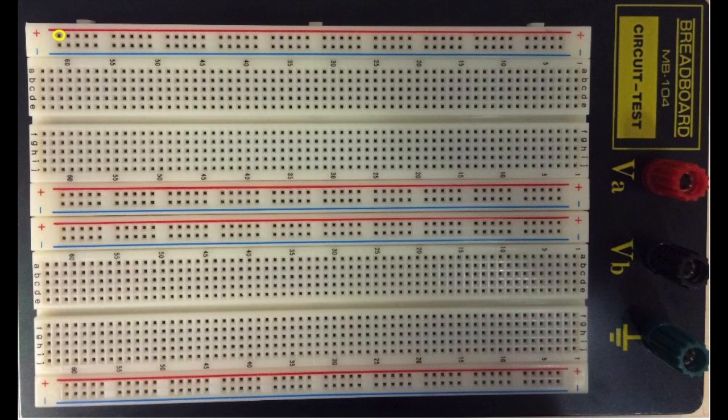Each hole along this row is connected at the back of the board to each other hole along this row. Therefore, by pushing two wires into this row it is similar to connecting those two wires together. There are eight similar rows on your breadboard.